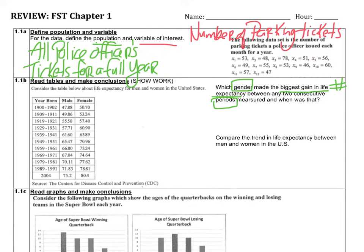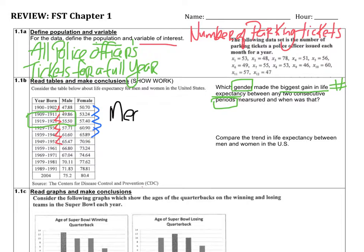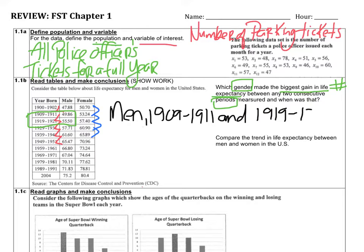This requires quite a bit of work. You need to compare consecutive two-year periods for men and then do the same for females until you find the biggest change. When you do that analysis, you'll discover it was between two specific time periods for the men. The final answer is that it was the men, between the time period of 1909 to 1911 compared to the time period of 1919 to 1921.